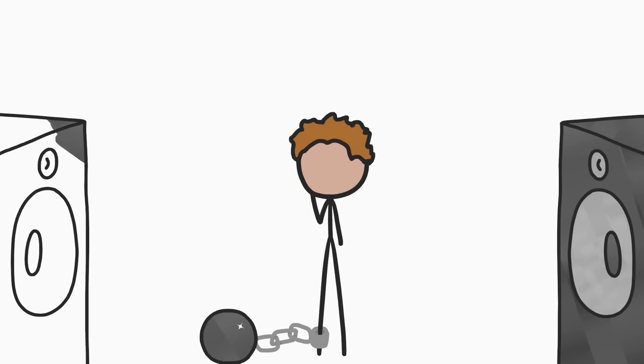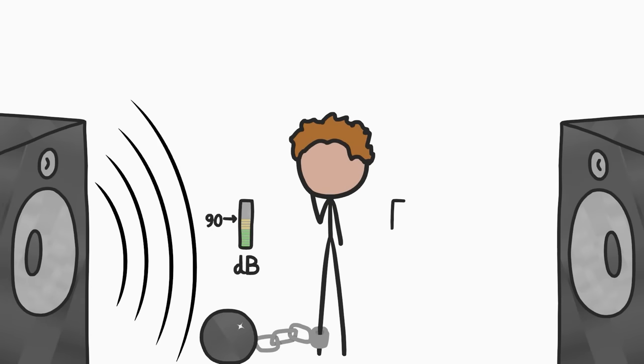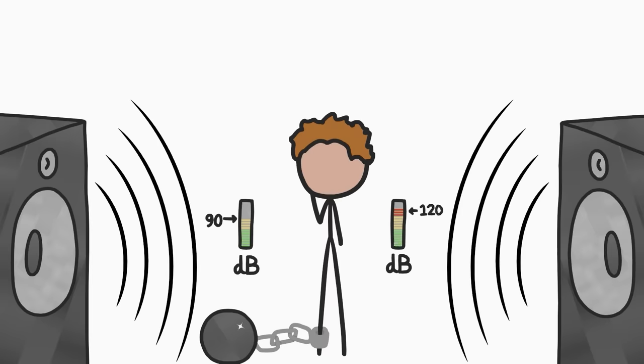If you were locked in a room with a pair of speakers and had to choose between a sound measuring 90 decibels or one measuring 120 decibels, you'd probably pick the one with the fewer decibels.